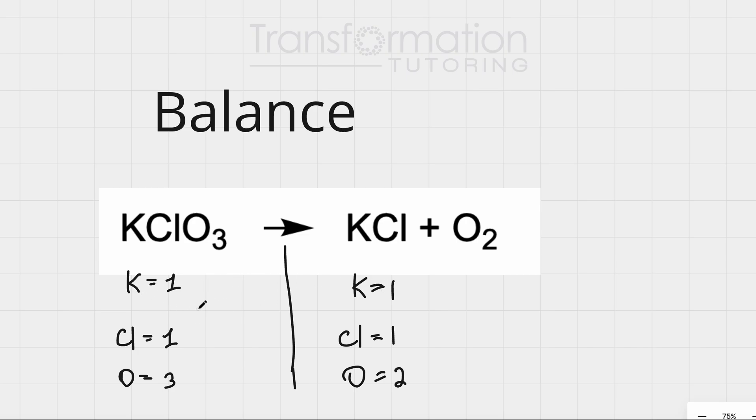Right now, you can see that K is the same, which means for now it is balanced. Cl is the same, which means for now it is balanced, but oxygen is not balanced.